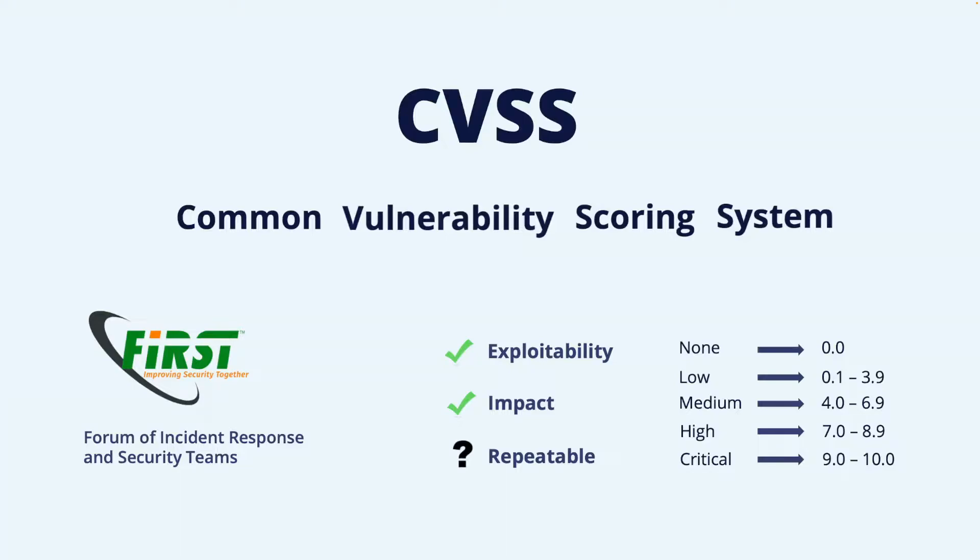There are several versions of the CVSS score, and its latest installment is CVSS 3.1. It uses the same underlying metrics as CVSS 3.0, but some minor modifications on guidance and how to interpret some metrics are made. The description here will follow the metrics in CVSS 3.0 and 3.1.